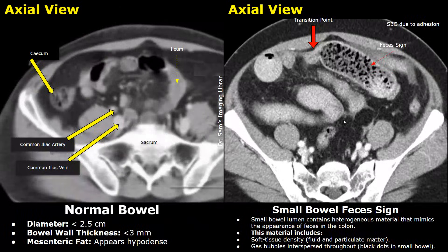If a dilated bowel loop is filled with gas and heterogeneous soft tissue density, it is called a small bowel feces sign. The dilated bowel loop is filled with black dots suggesting air or gas along with low-density fluid and particulate matter. This is how feces appear in the colon, and this appearance mimics feces in the colon — that is why it is termed the small bowel feces sign.